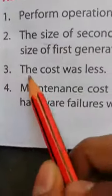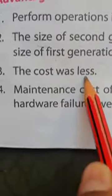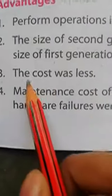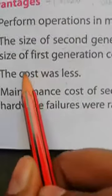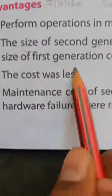Point third. The cost was less. Less means कम. लागत कम थी. जो second generation के computer थी, उनकी जो cost थी, वो क्या थी? कम थी.